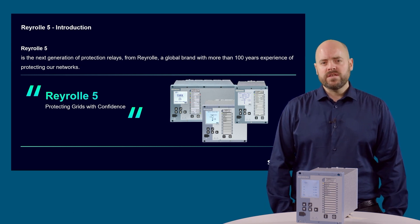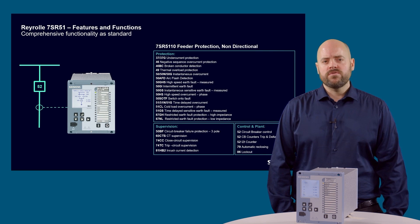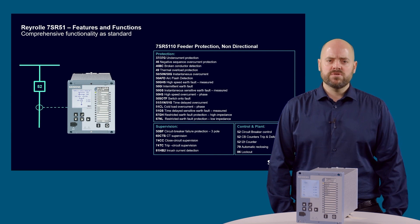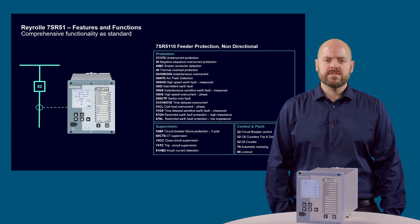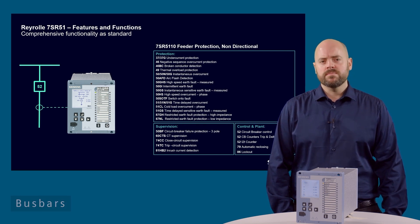Let's take a look at the features and functions that the 7SR51 offers for feeder protection applications. The Reyrolle 7SR5110 devices provide the primary function of overcurrent and earth fault protection functionality for medium voltage substations, as well as backup protection for other main protection devices — for example on lines, transformers, generators, motors and busbars.